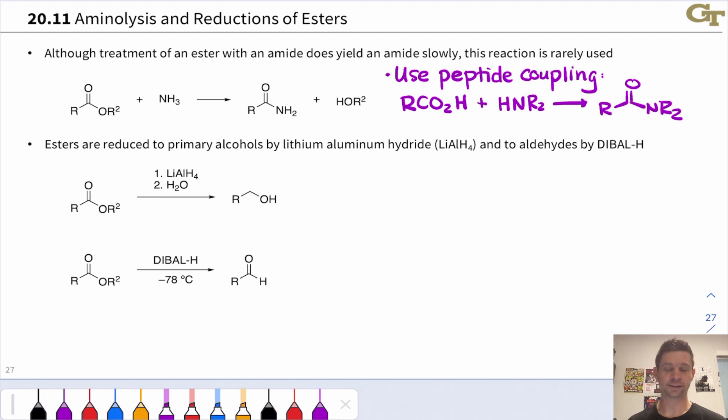If we treat an ester with lithium aluminum hydride, we reduce it all the way down to a primary alcohol, and we've seen this reaction previously. Two equivalents of hydride are added to the organic substrate. If we want partial reduction of the ester just to the aldehyde, we can use DIBAL-H at low temperature, negative 78 degrees C, and that low temperature is actually critical. If you raise this up to room temperature, this will reduce all the way to the primary alcohol, so you've got to watch out for that.